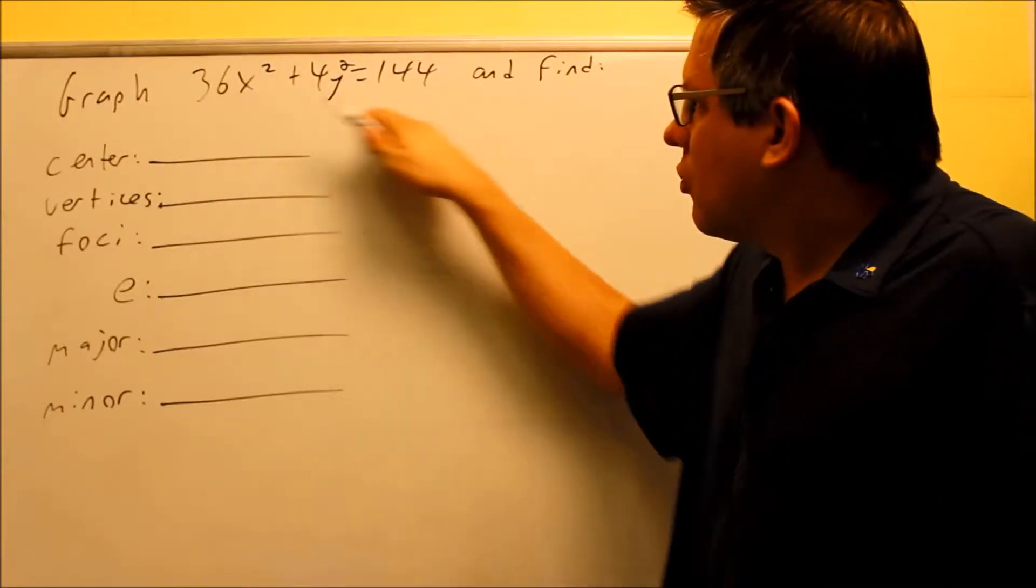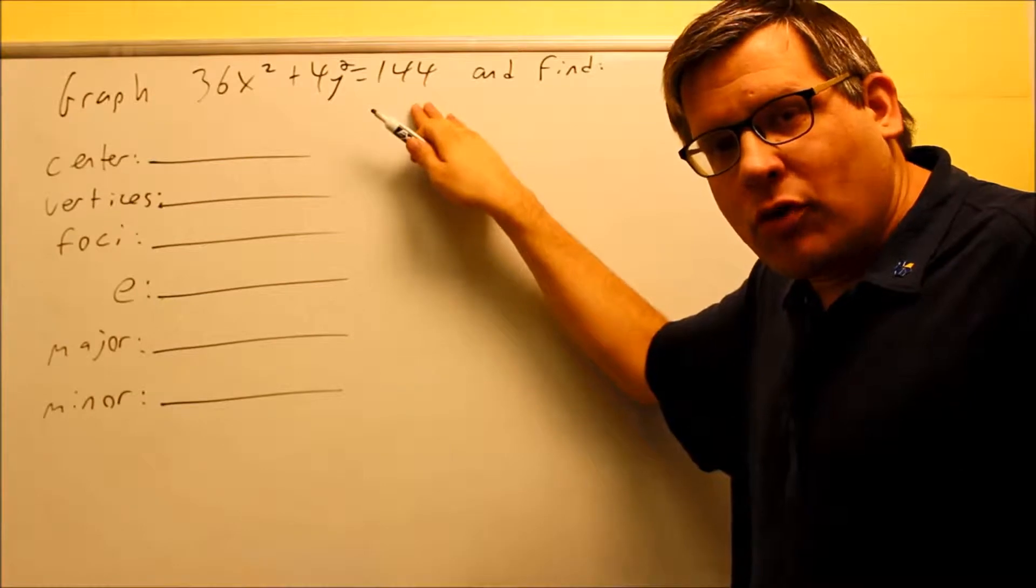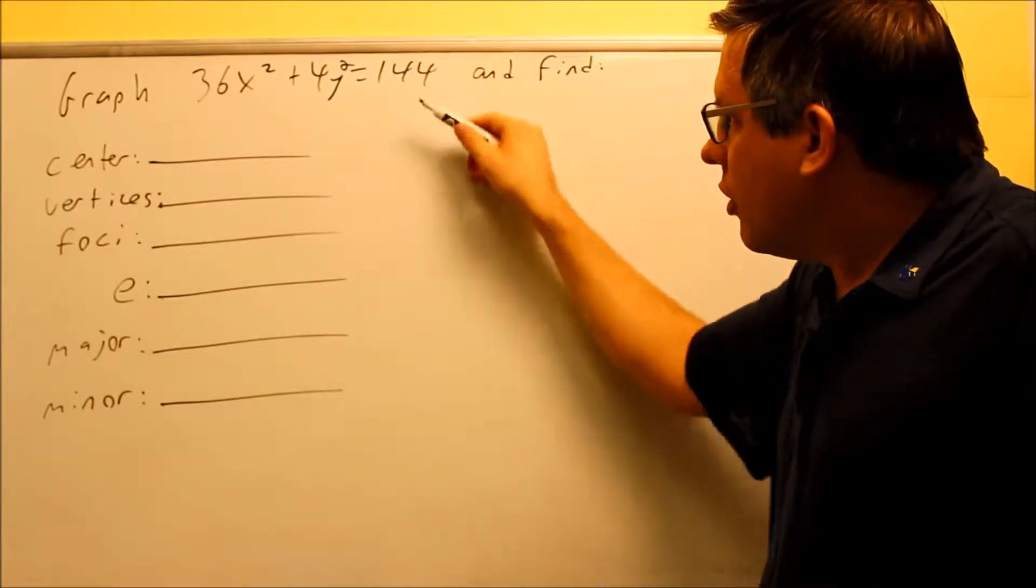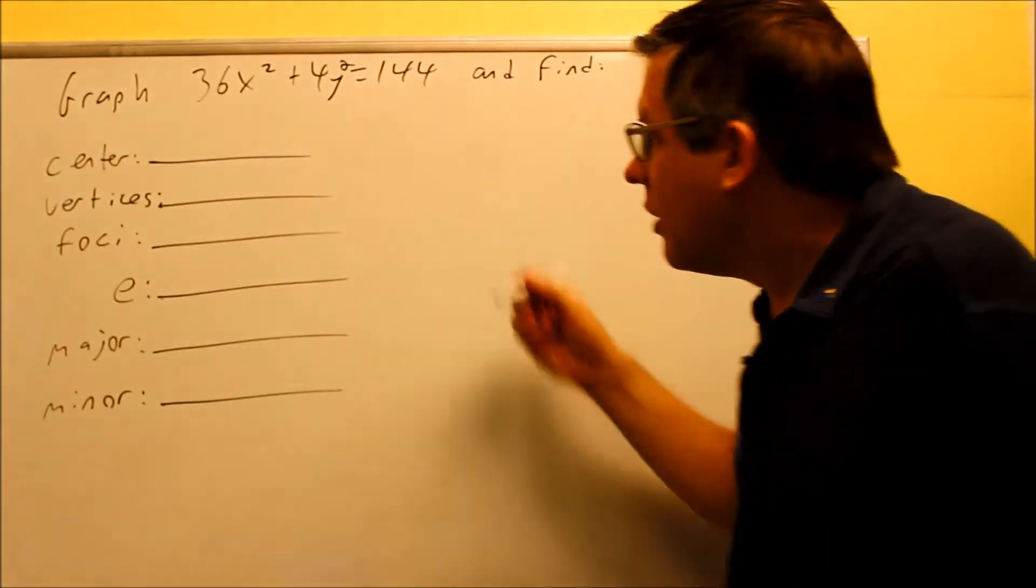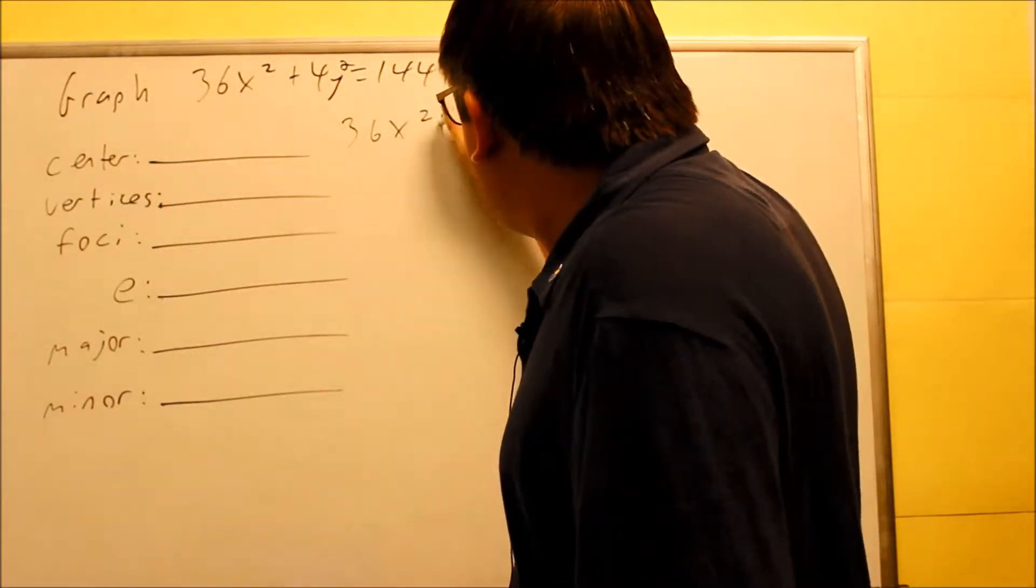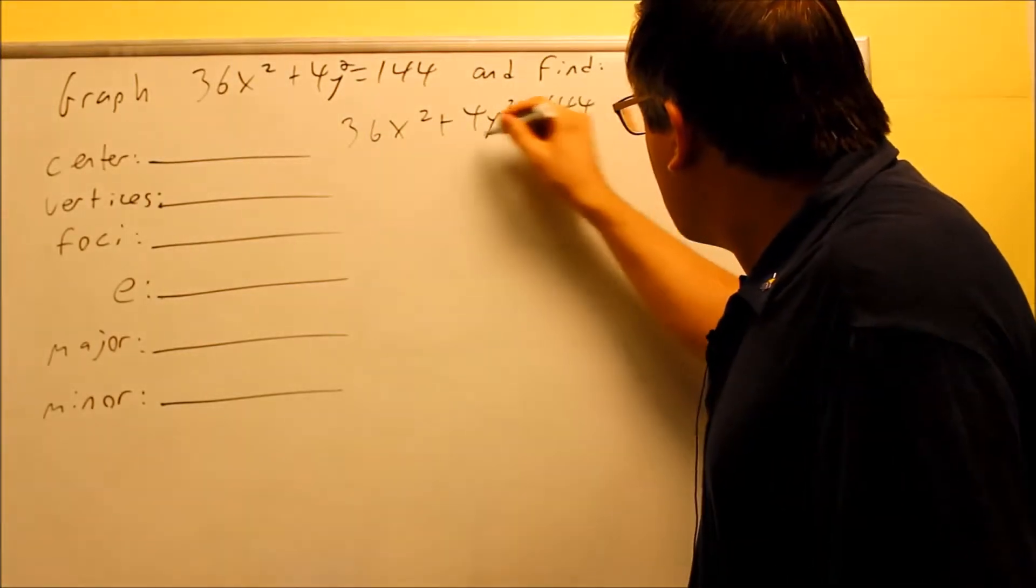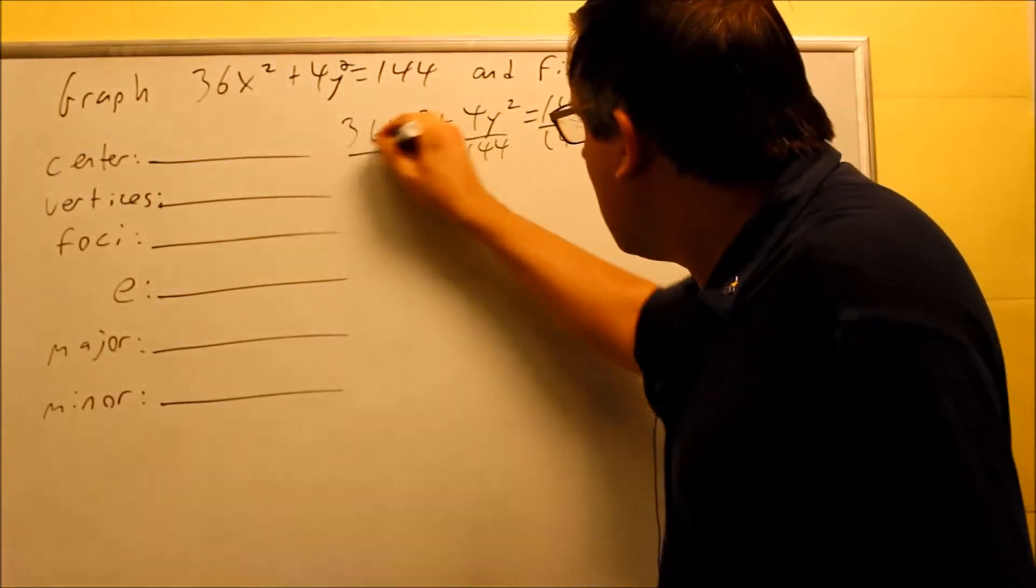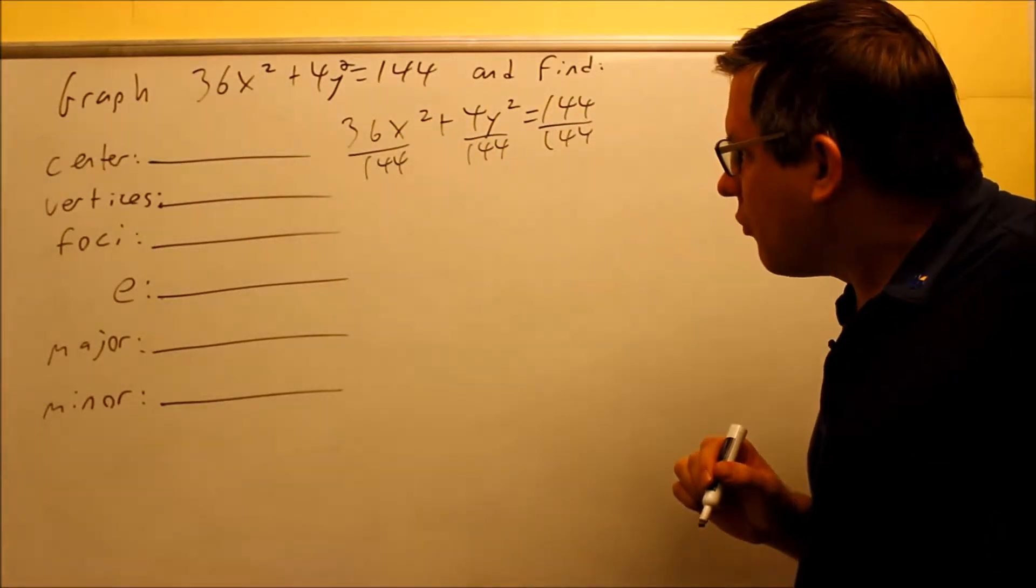Particularly, what we're going to do is take this whole equation and divide both sides by 144 because then we get a 1 over here. So basically, whatever number you see after the equal sign, that's the one you want to divide by. So 36x² plus 4y² equals 144 we start with, and we're just dividing everything by 144 because we want to get it into the proper form.